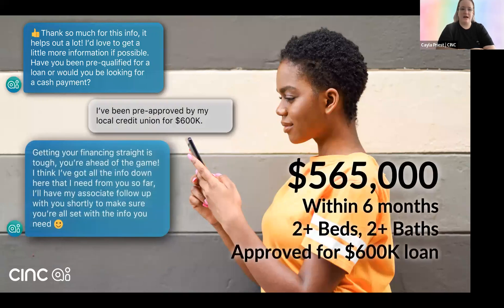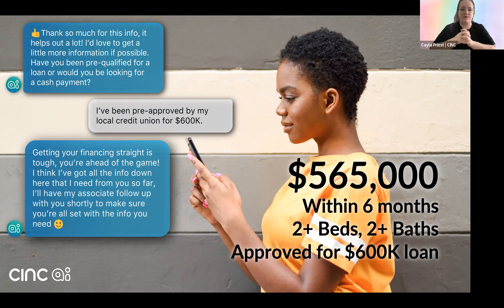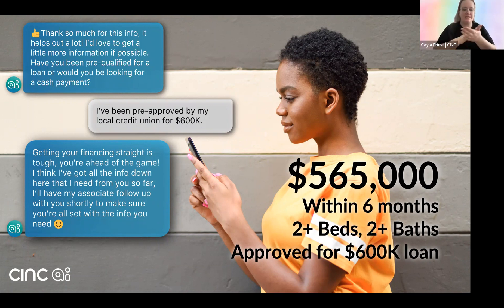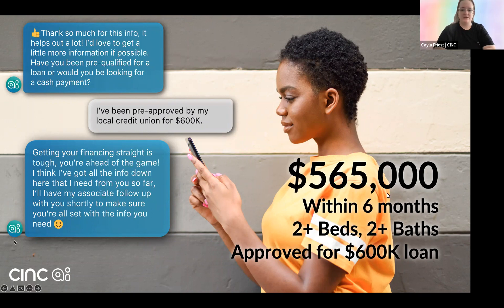Here's a little snippet of a conversation that happened with a lead from Sync AI. The AI conversations are shown in blue, and the lead let us know that they had been pre-approved by the local credit union for $600,000. This is an example of how Sync AI is very conversational and does more than just ask a question and get a response. After the lead says they've been pre-approved, it says: 'Getting your financing straight is tough — you're ahead of the game. I think I've got all the info I need from you so far. I'll have my associate follow up with you shortly to make sure you're all set.' This lead eventually did close for around that price.